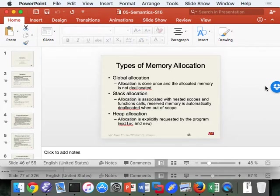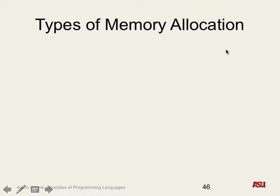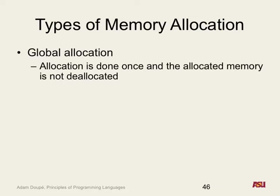Let's jump right back to semantics and memory allocation. We want to know what kind of errors can occur in memory allocation. To briefly go over Monday — what's global memory allocation? Allocation is done once, so memory is allocated right when the program runs and then it's never released. A classic example is global variables.